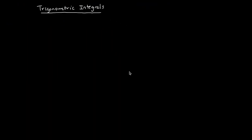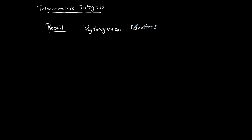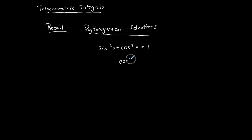We're going to do some examples with trigonometric integrals. First, recall the Pythagorean identity: sine squared plus cosine squared equals one. We can manipulate this — cosine squared equals one minus sine squared, and sine squared equals one minus cosine squared. We're going to use this concept for the trigonometric integrals we're about to do.